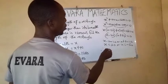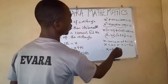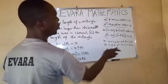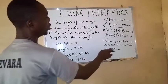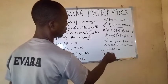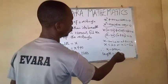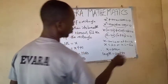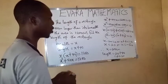So therefore, x equals 20. So that means the breadth of the rectangle is 20 centimeters. So if the breadth is 20 centimeters, the length will now be 20 plus 40, which is what? 60 centimeters.